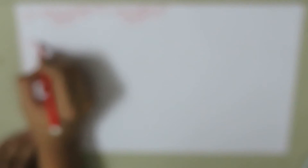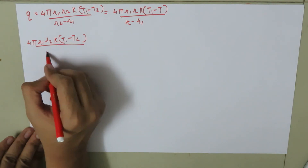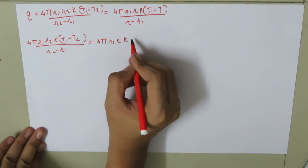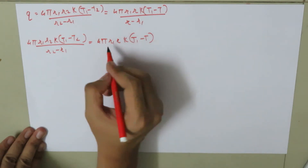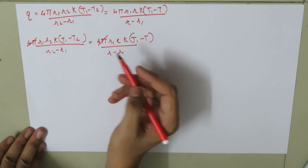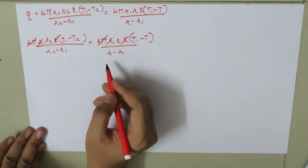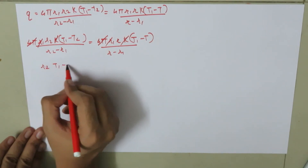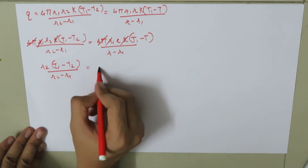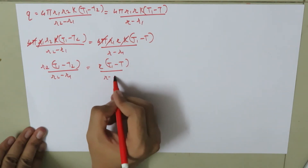Simplifying by cancelling 4π and R1, we get: R2 times (T1 minus T2) divided by (R2 minus R1) is equal to R times (T1 minus T) divided by (R minus R1).